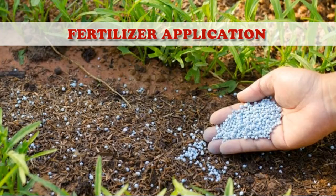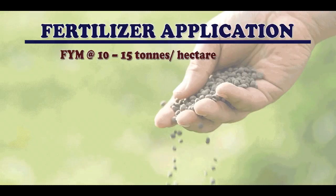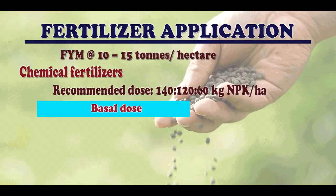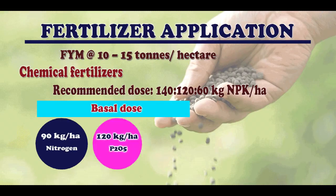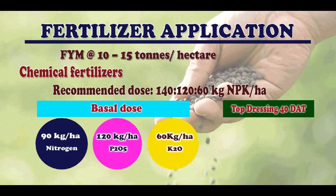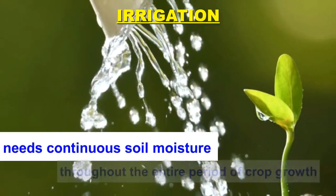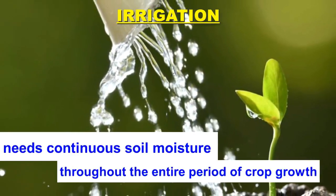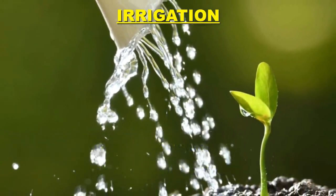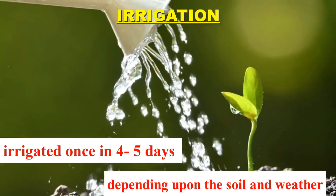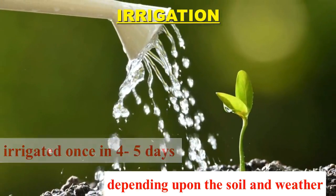Fertilizer can be applied to aster as follows. We can apply FYM at the rate of 10 to 15 tons per hectare and chemical fertilizer at the rate of 90 kg nitrogen, 120 kg P2O5, 60 kg K2O as basal dose. The crop has to be top dressed with 50 kg nitrogen at 40 days after transplanting. Since China Aster is a shallow rooted crop, it needs continuous soil moisture throughout the entire crop growth period. The crop has to be irrigated once in 4 to 5 days depending upon the soil and weather conditions.